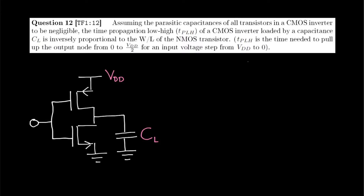It's important to note that TPLH is the time needed to pull up the output node from 0 to VDD over 2, which is this node in the inverter topology. To understand the influence of the size of the NMOS transistor on this propagation time, it's important to investigate what happens when we pull this output node from low to high.